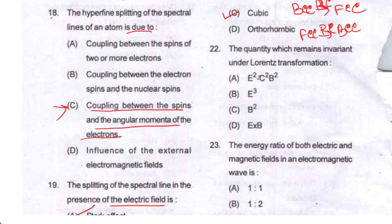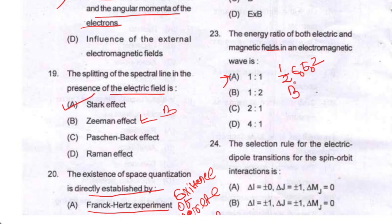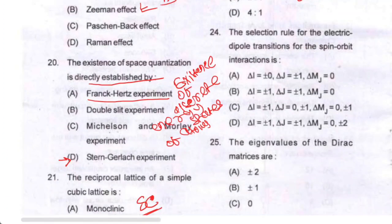Question number twenty-two: the quantity which remains invariant under Lorentz transformation is E² − c²B². Question number twenty-three: the energy ratio of the electric and magnetic fields in an electromagnetic wave is 1:1, option A. The energy density of the electric field is ½ε₀E₀² and for the magnetic field it is B₀²/(2μ₀), and they have the same average value.